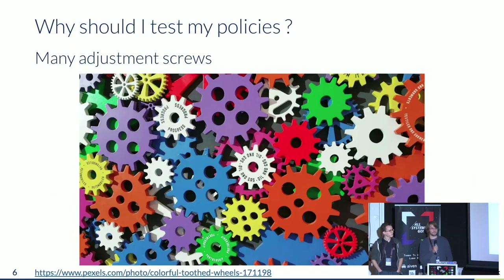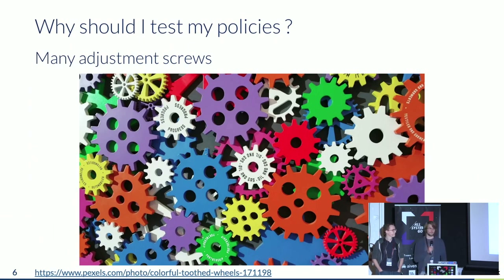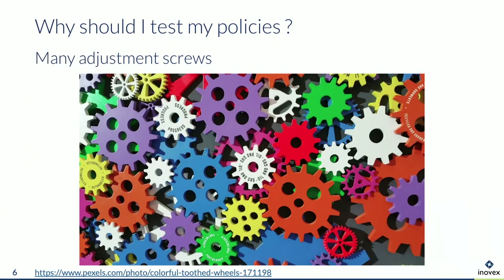Everybody that knows Kubernetes knows it's a pretty complex system with many adjustment screws. You have thousands of flags that you can provision your cluster and your components with. The interesting question always is: do all these flags work together, or maybe I've set a flag that will be ignored or just won't work? And the main question is: how do I know if everything works or still works?